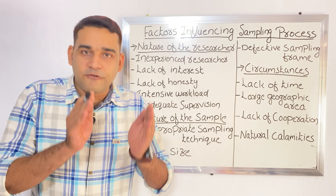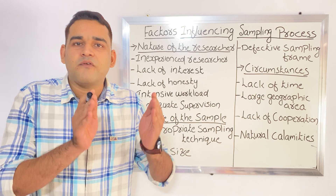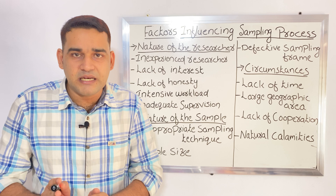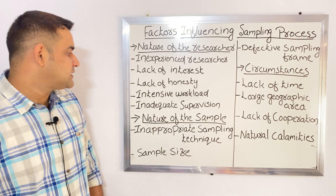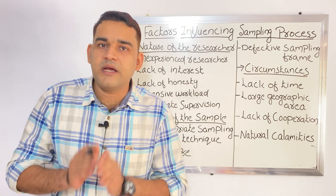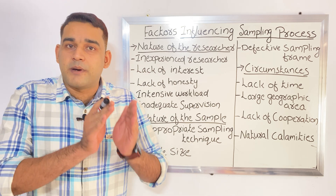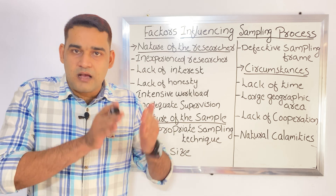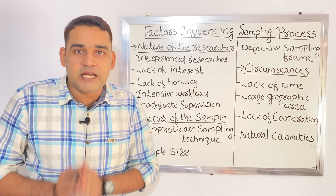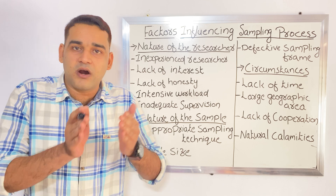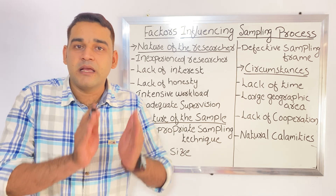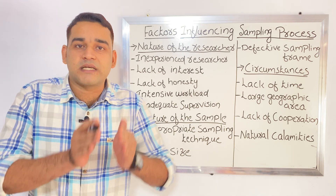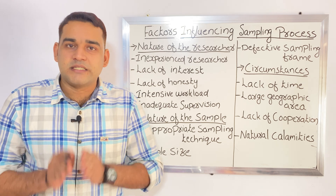A lot of workload and lack of time is also a problem — you cannot complete at the perfect time. So much workload will affect the sampling process. Next one is inadequate supervision. In research, no one is perfect; we need a guide and a co-guide to supervise us. If you don't have a guide, or if they are not guiding you properly, it is also going to affect the sampling process. Inadequate or improper supervision will affect your sampling process.